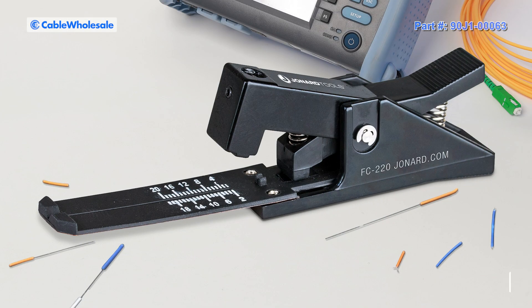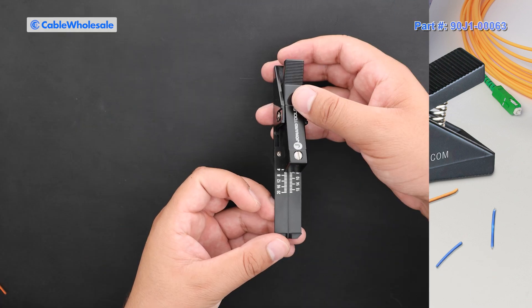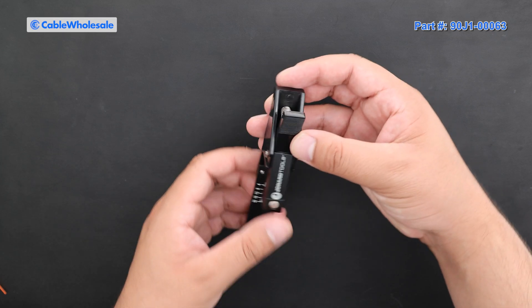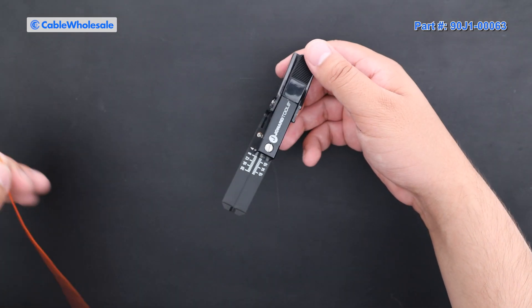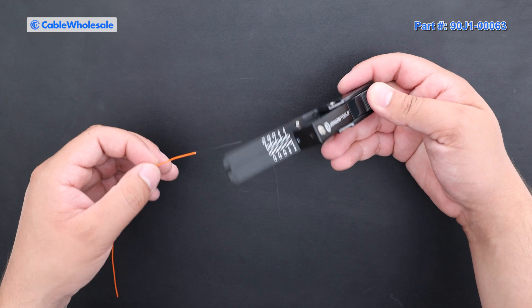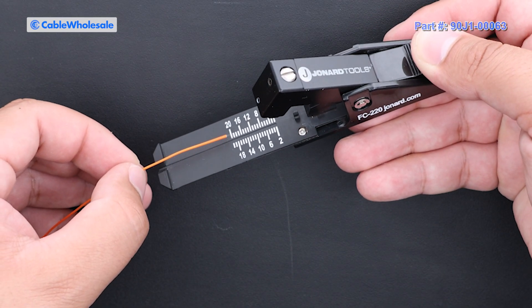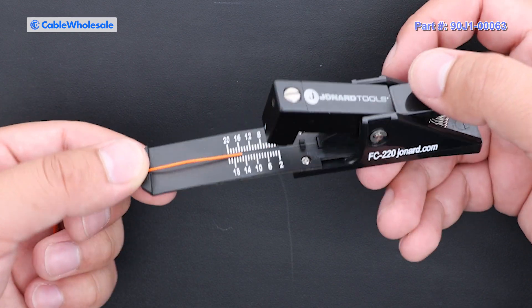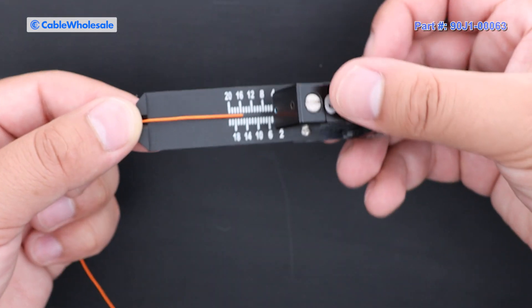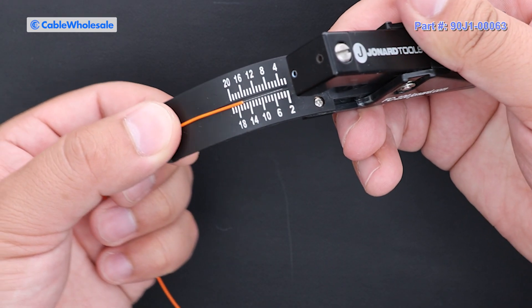The first one is called a manual or field cleaver. These are often used with quick-term connectors and are one of the most cost-effective methods. Here's how it works. Press the lever and insert the fiber. Release the lever. Then press down on the head to score the fiber. Then bend the spring-loaded arm to break the fiber in a clean and controlled manner.